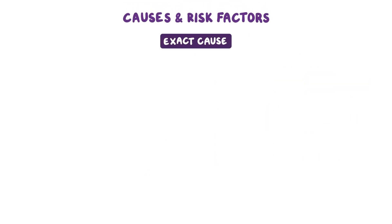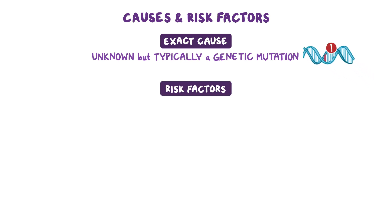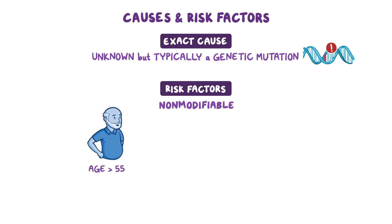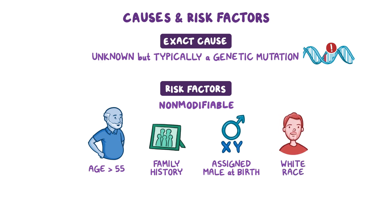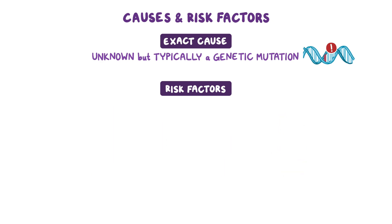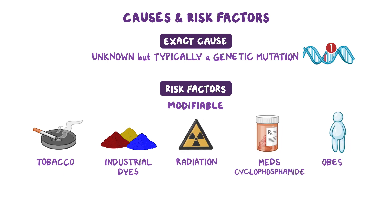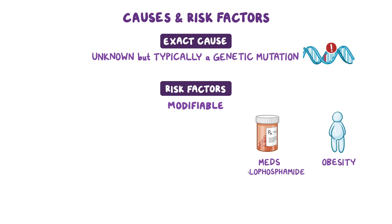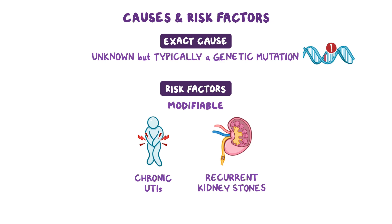The exact cause of bladder tumors is unknown, but there is typically a genetic mutation in one of the bladder's cells. Non-modifiable risk factors include age above 55 years, family history of bladder tumors, being assigned male at birth, and white race. Modifiable risk factors include exposure to toxic substances — most importantly tobacco use or industrial dyes — radiation, medications like cyclophosphamide, obesity, and damage from chronic urinary tract infections or recurrent kidney stones.